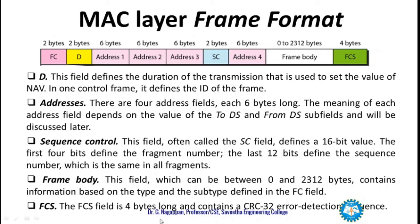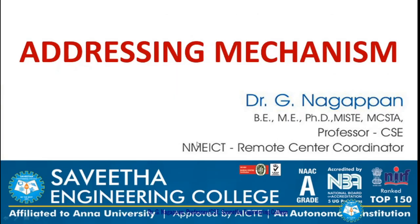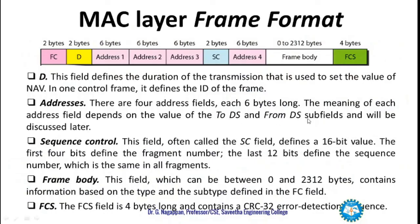The frame body can be between 0 and 2312 bytes and contains information based on the type and subtype defined in the FC field — essentially the data being transmitted. The FCS (Frame Check Sequence) field is four bytes long and contains a CRC-32 value to detect errors. In the next video, we will look at the addressing mechanism, which will explain the to DS and from DS bits as well as the address fields.